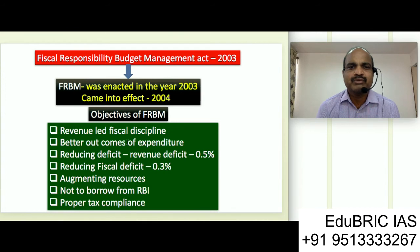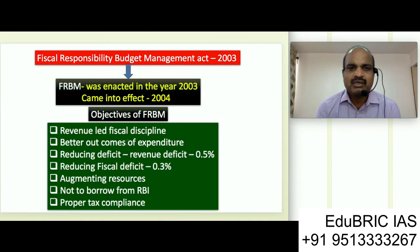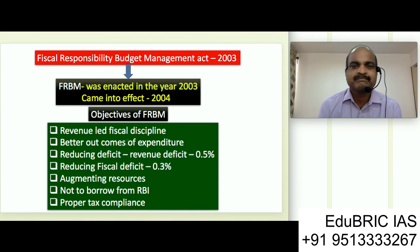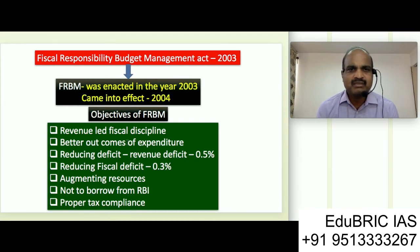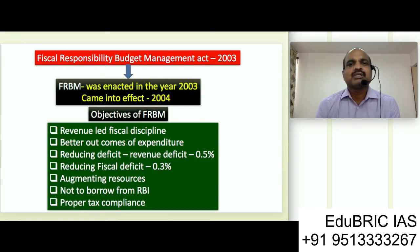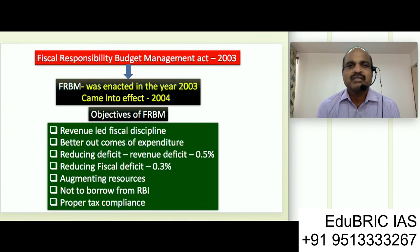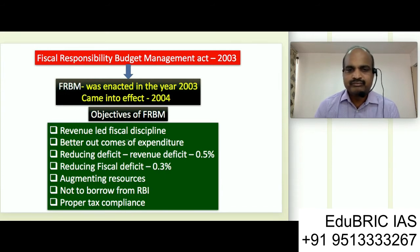One rupee spent should generate at least one rupee of revenue. The government was very serious — a lot of money being incurred was actually not giving outcomes. Therefore, the government decided through this Act that a certain amount of discipline and prudence has to be ensured so that returns are there. There are other miscellaneous objectives: augmenting revenue capacity, ensuring that borrowing from RBI is minimized as much as possible, and proper tax compliance so that revenue resources can be maximized.